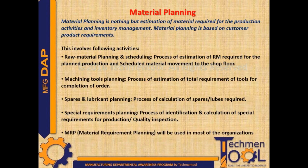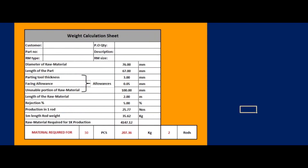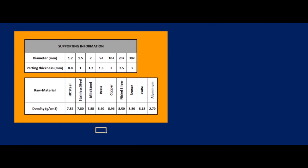MRP means Material Requirement Planning — a software-based system used in most organizations. In basic material planning concepts, weight in cages of raw material is calculated based on density and volume. Material requirement for one product consists of part length, allowances, allowable rejection percentage, and one full length of rod, so adding all these figures gives the production outcome in one rod.